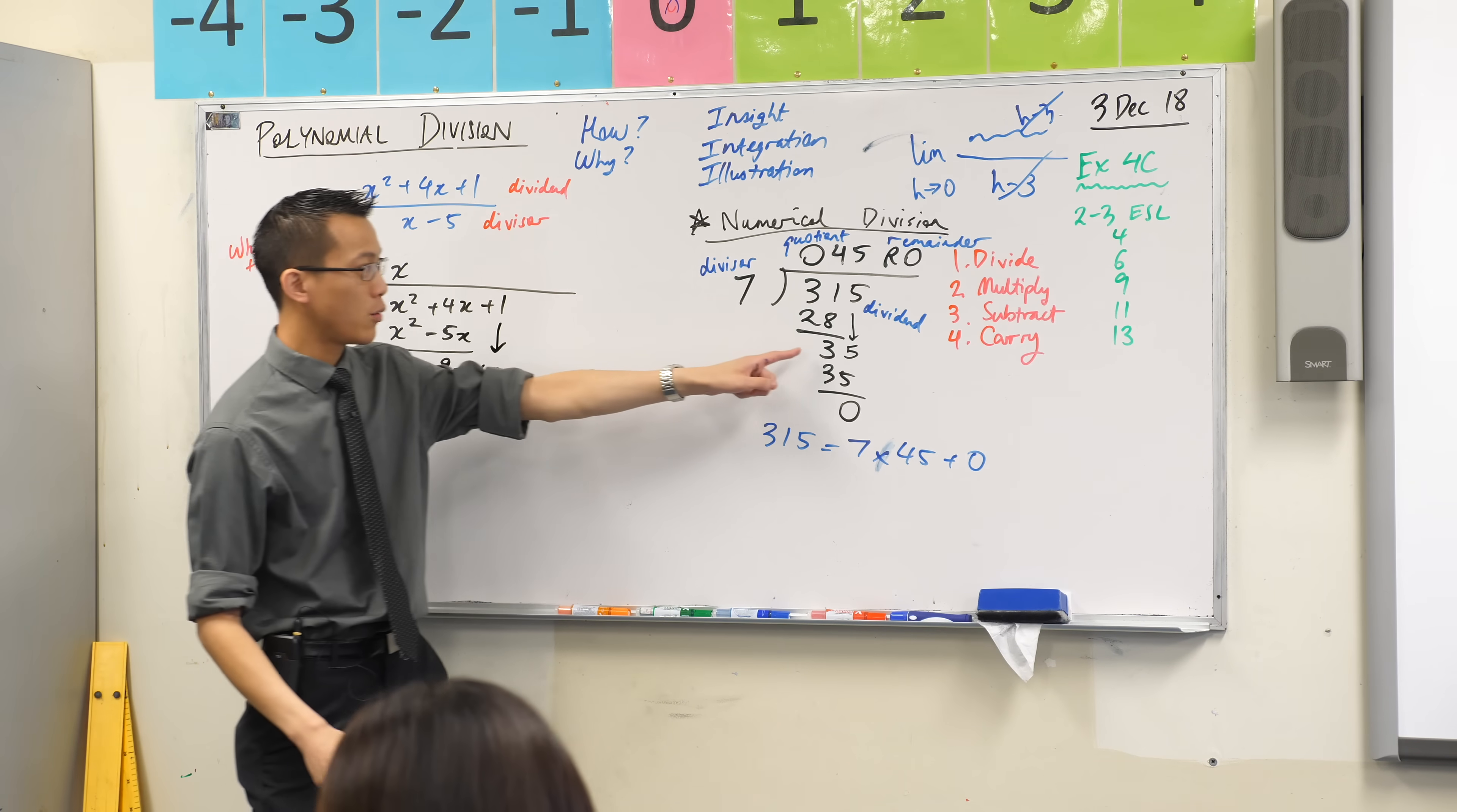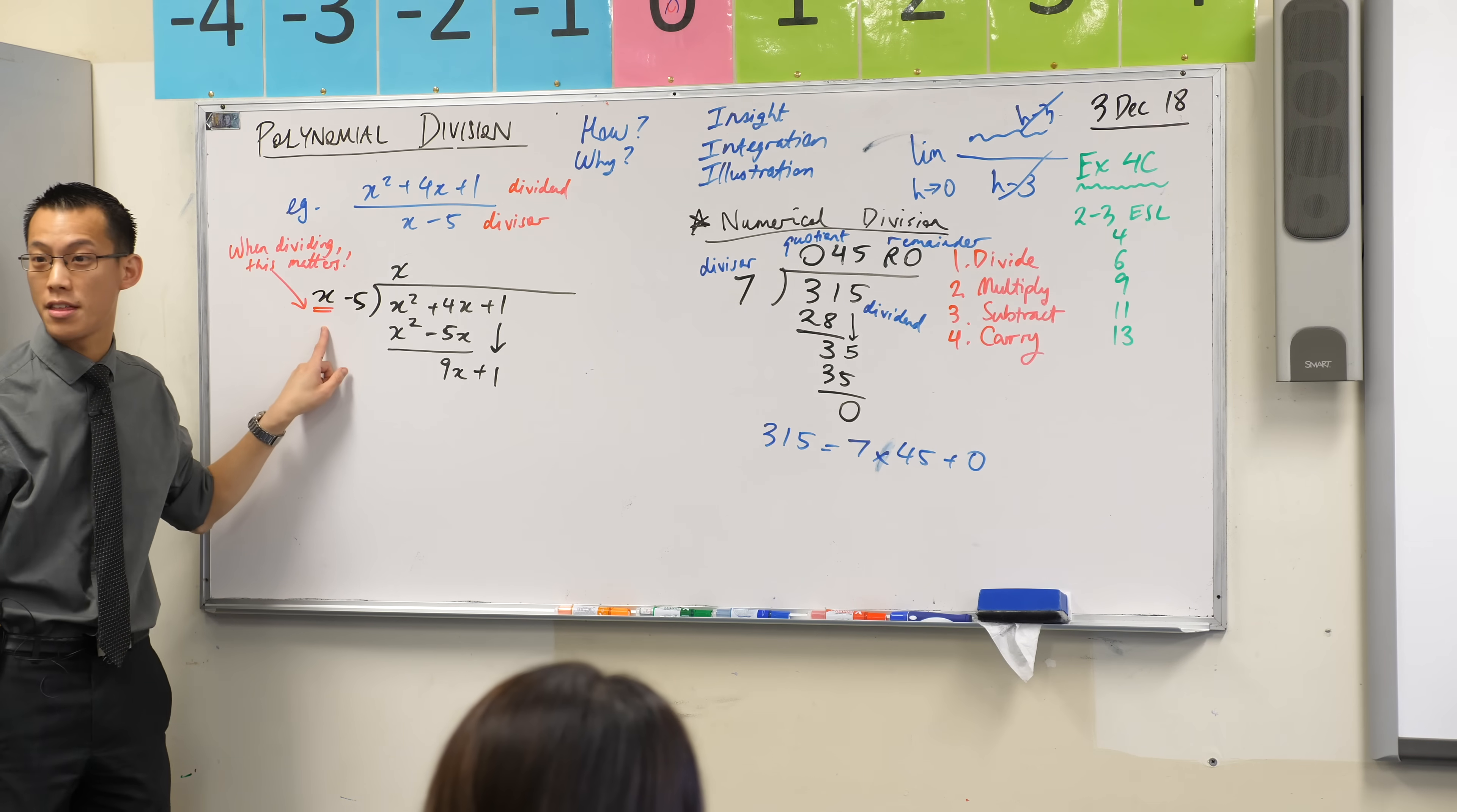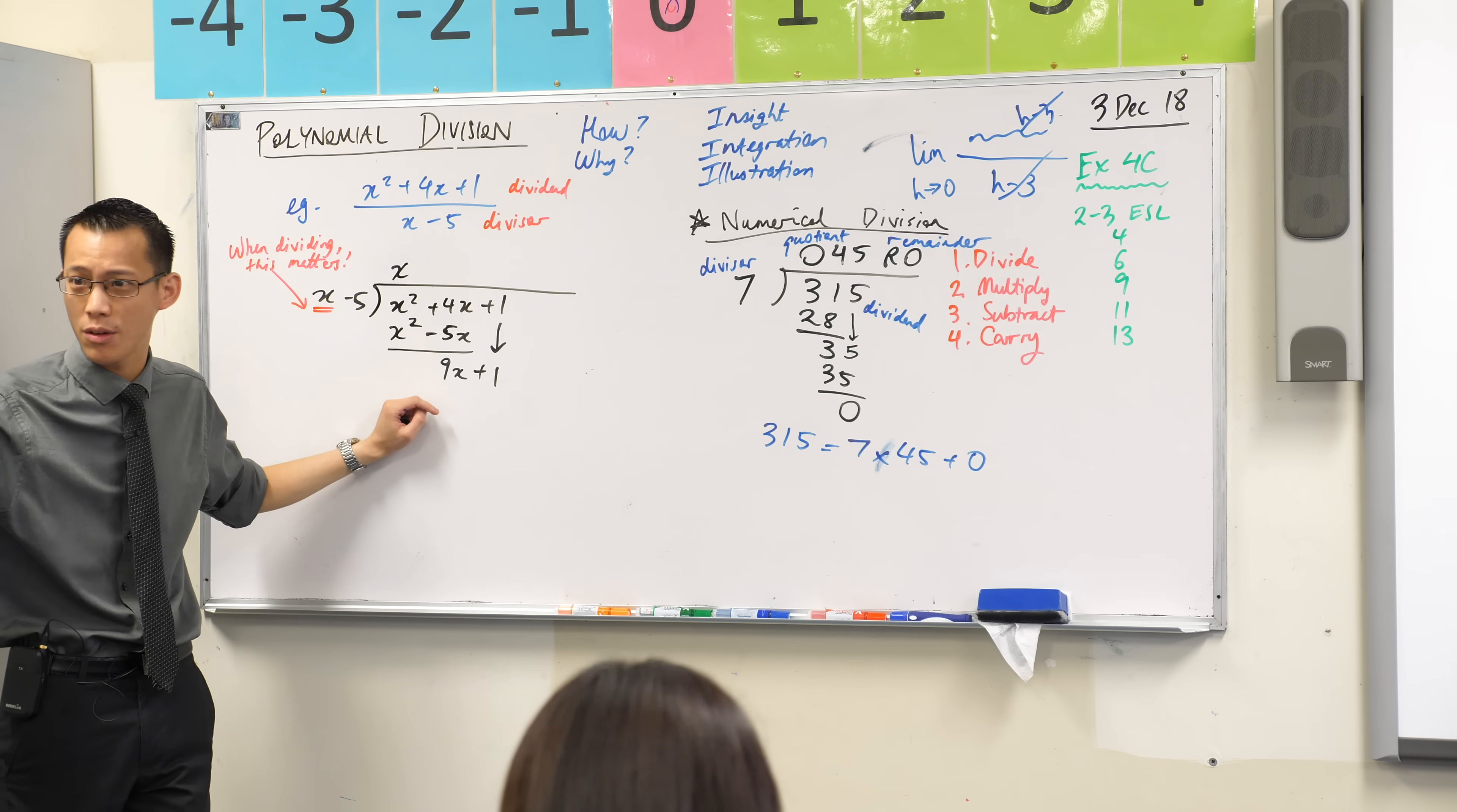Now at this point here we got to 35 and then I just had to go right back to the beginning and start the dance again. Does that make sense? So how many times does x go into 9x? Remember, when dividing, this is the only thing that matters. Nine times, right? If x was 7, this would be 63. Goes in 9 times. If this were 9, that would be 90. Wait, what did I just say? Yeah, no. If this were 10, this would be 90. Goes in 9 times. Are you okay with that?